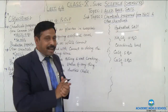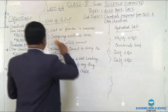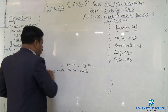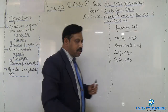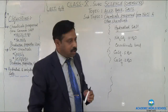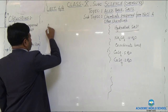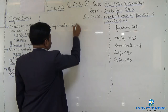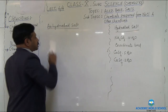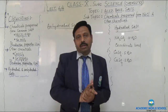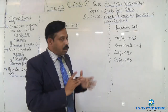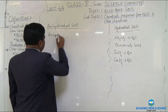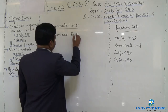An anhydrous salt is the opposite — a salt that has already lost its water of crystallization. Anhydrous salts do not have water molecules of crystallization. For example, anhydrous ferrous sulfate, FeSO₄, has no water molecules.